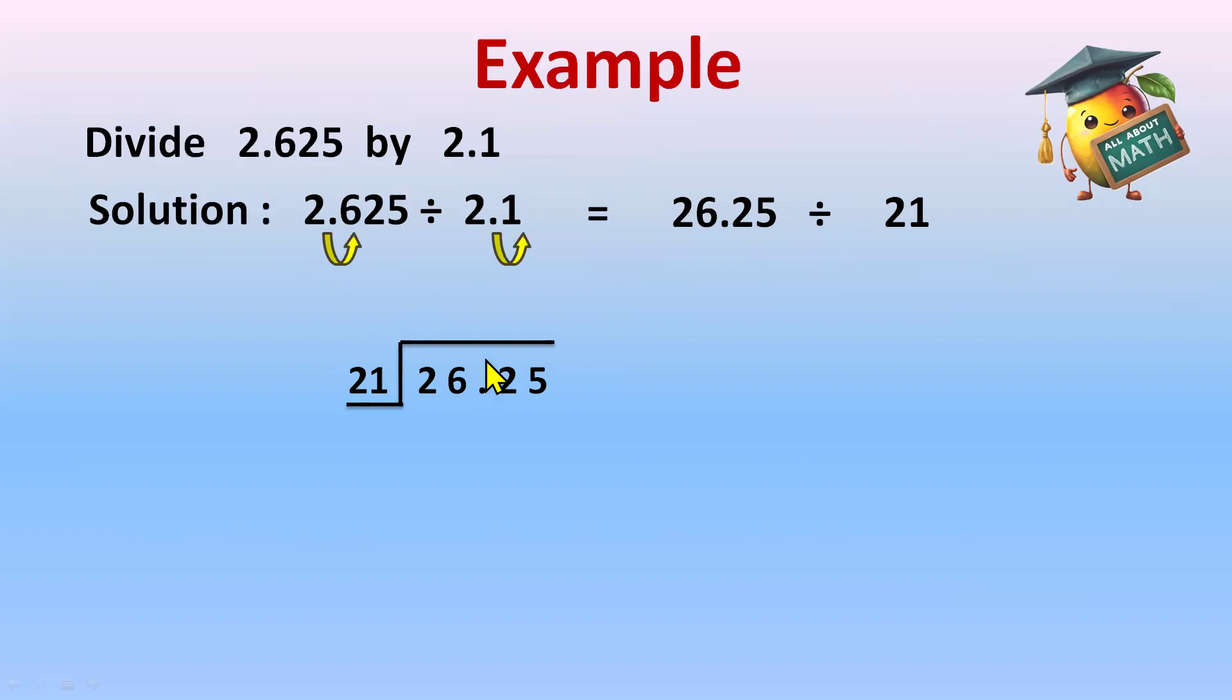Now, this decimal point will go up exactly in the quotient from the dividend. 21 ones are 21, and now subtraction: 6 minus 1 is 5, and 2 minus 2 is 0. Now this 2 will come down and become 52. 21 twos are 42, and now subtraction: 2 minus 2 is 0, 5 minus 4 is 1.